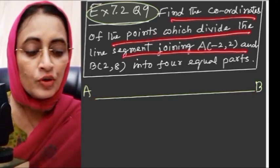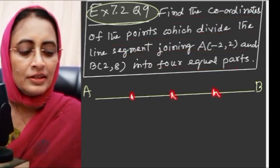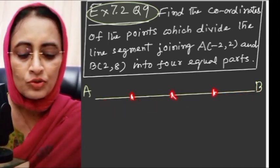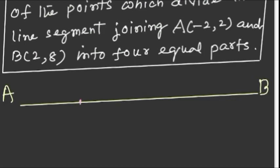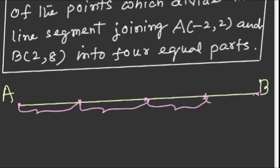Four equal parts means the line segment AB is divided into four equal pieces. I'm drawing a rough sketch because a rough sketch can save you from many troubles in the sum. According to the question, all four parts are equal - this is equal to this is equal to this is equal to this.